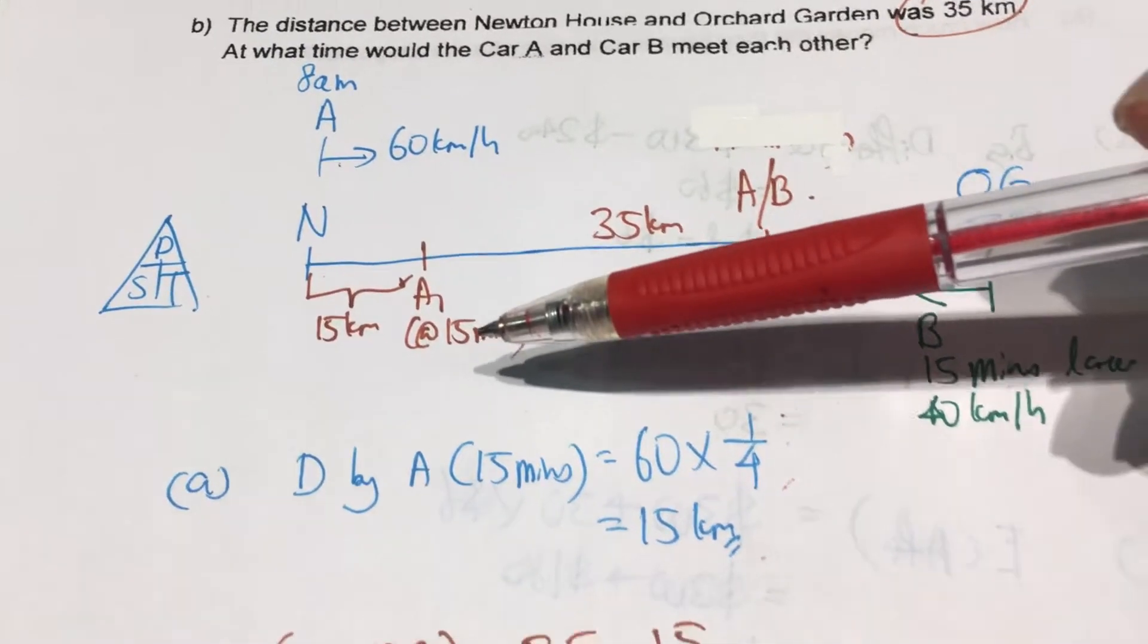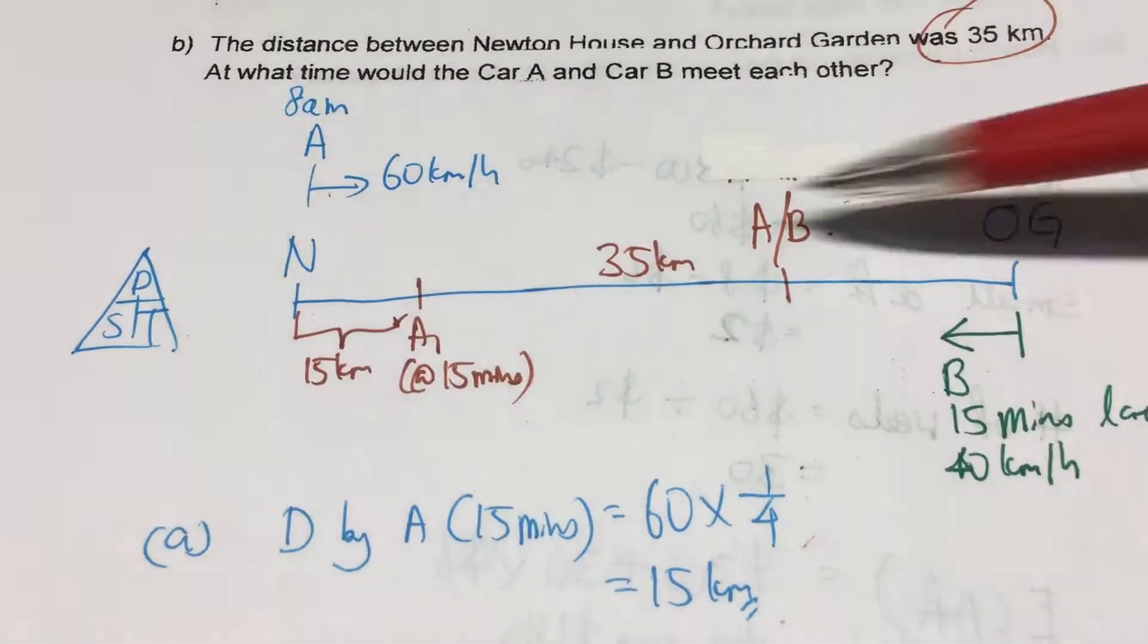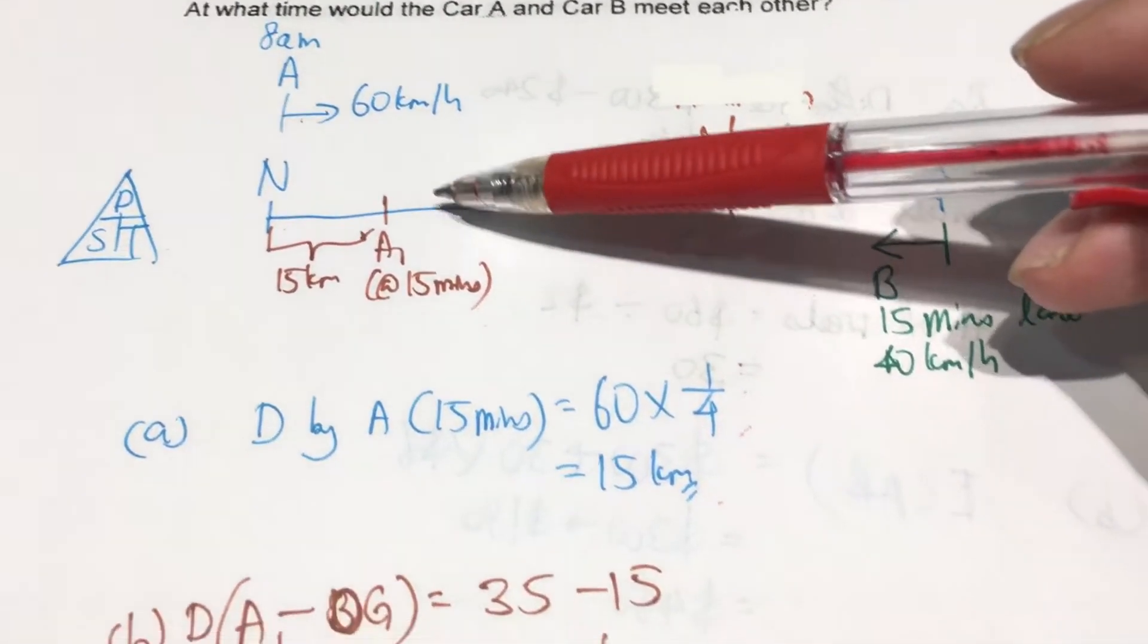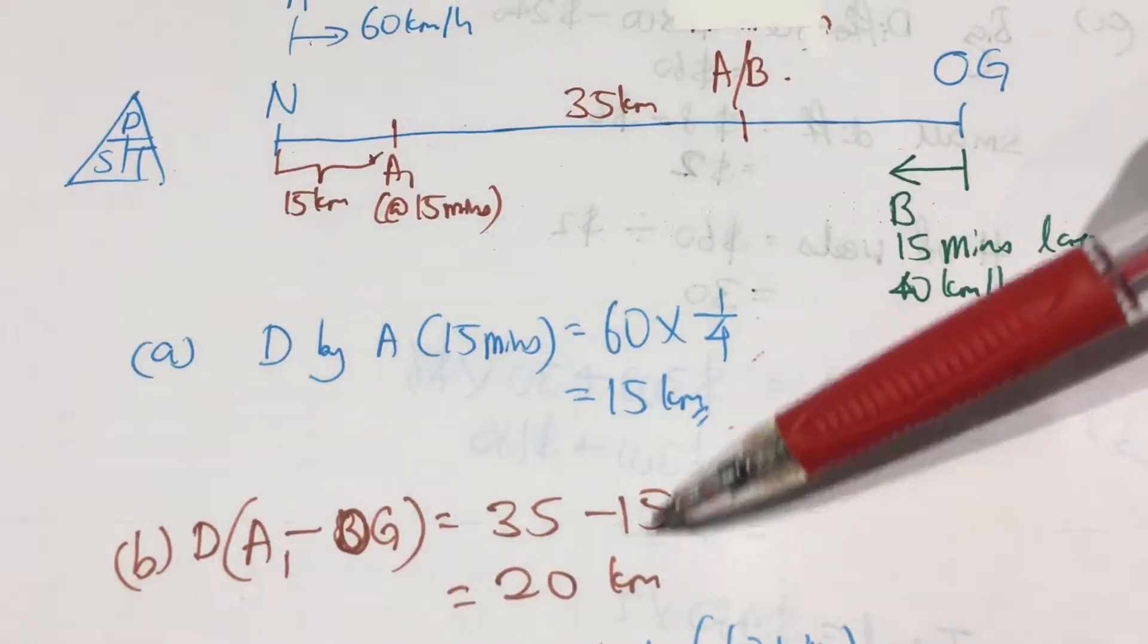So, which means that we need to start to come from here to here. So the remaining distance will be 35km minus 15km, which is 20km.